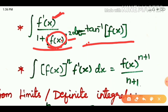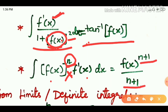The next property is: integral of f(x) to the whole power n, with f'(x) in the numerator. The answer is f(x) to the whole power n plus 1, divided by n plus 1. This is the final answer.